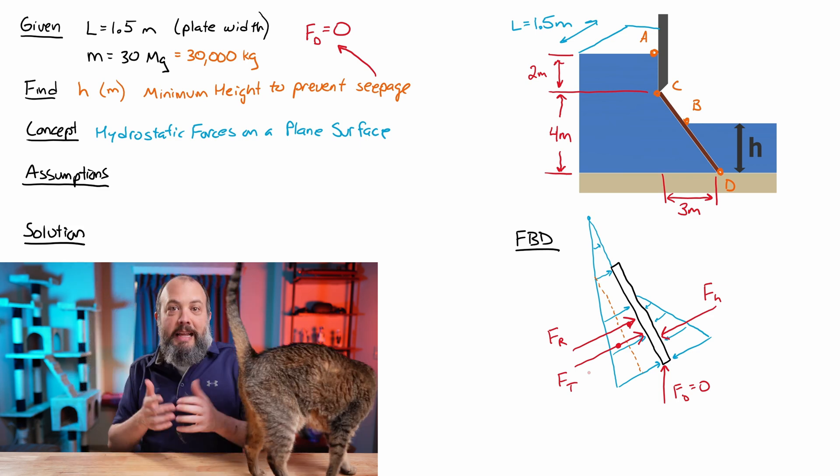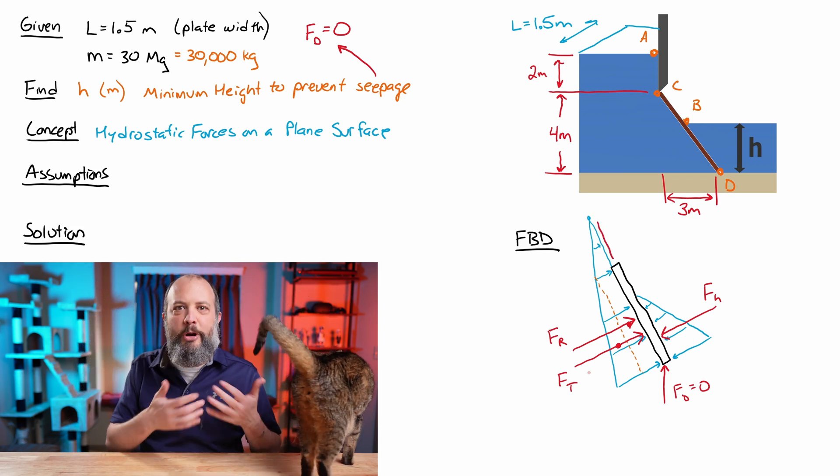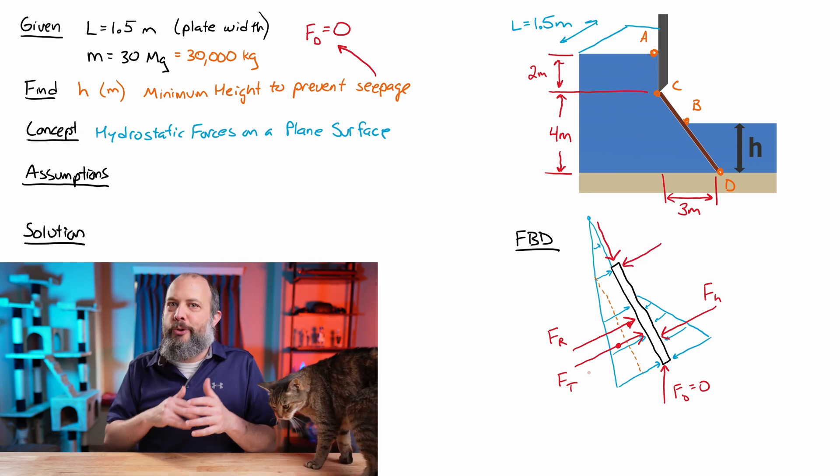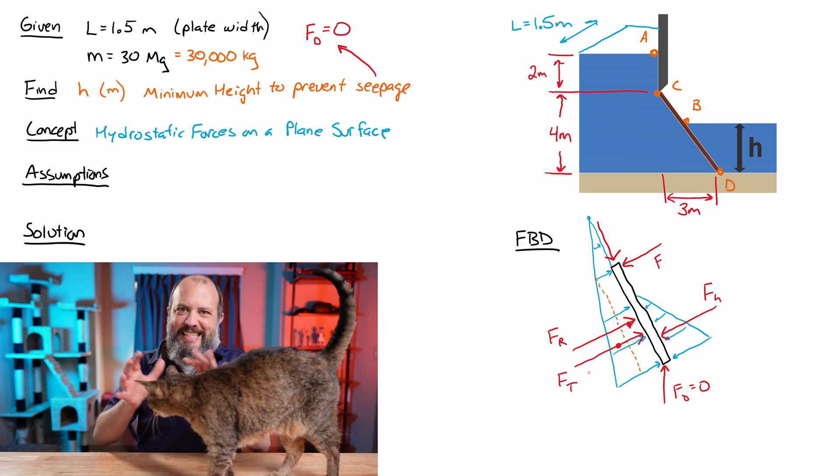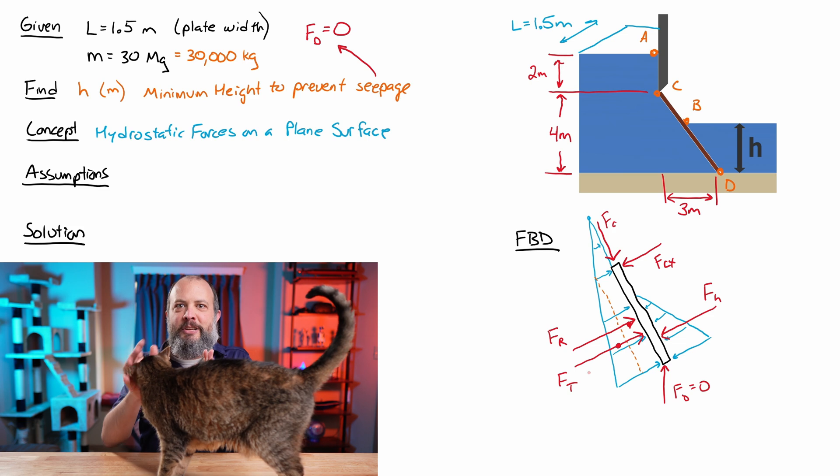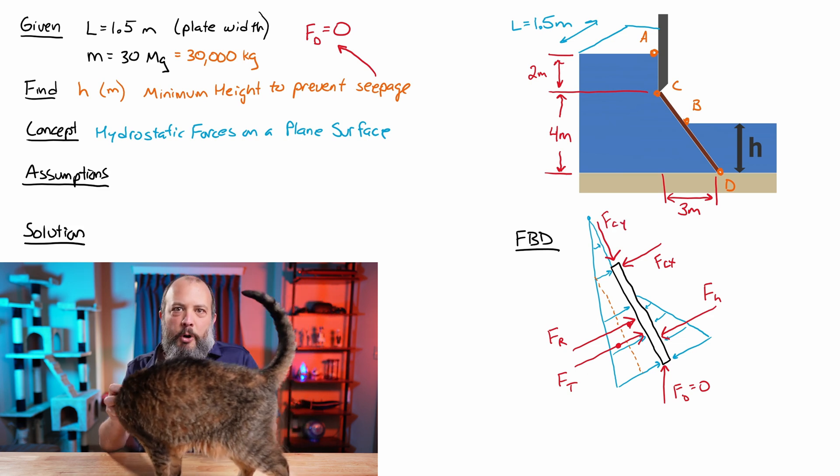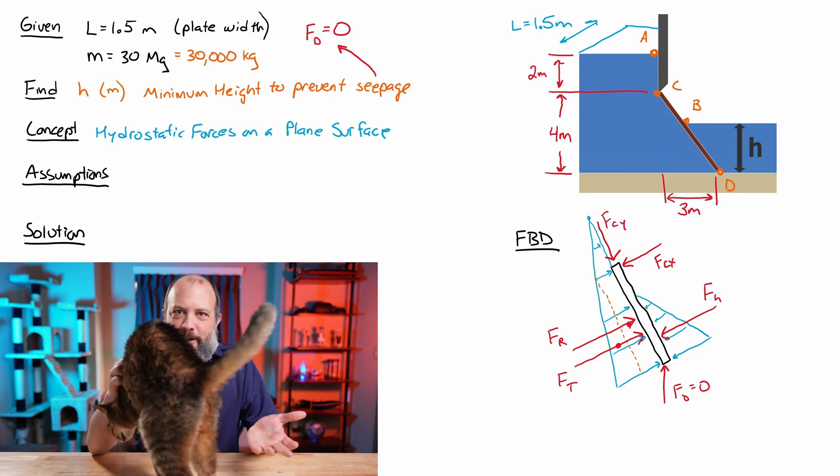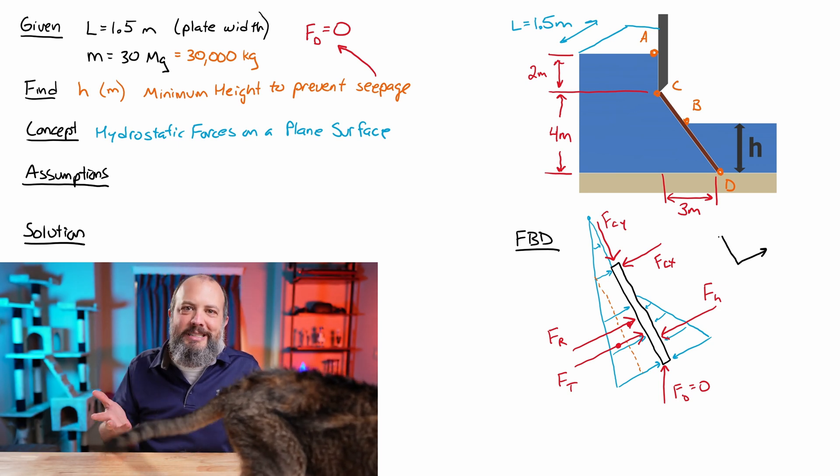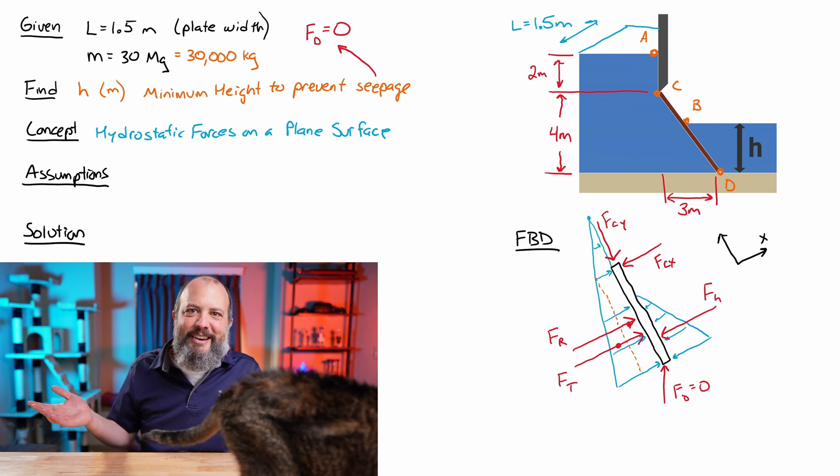And lastly, since there's a pin joint at point C, there's going to be two forces, one in the X and one in the Y direction, where you'll notice that I've actually rotated. Instead of X and Y being horizontal and vertical, I'm rotating them so that they are parallel and perpendicular to the gate itself. Really, I'm only drawing these for completion. When I do a sum of moments, I'm going to do a moment of point C, so both of these forces are going to cancel out anyway.